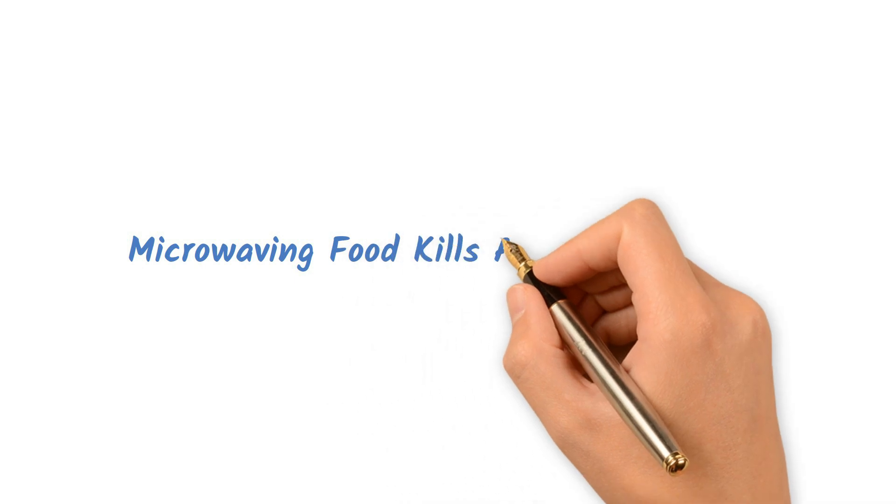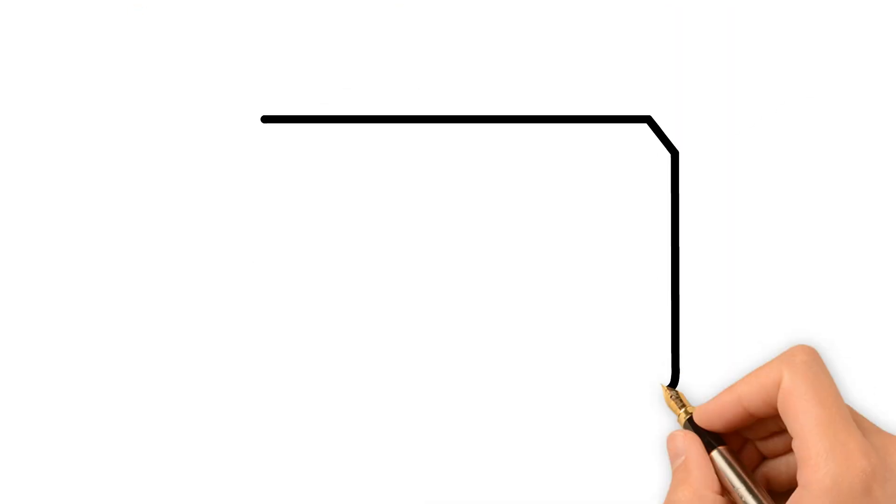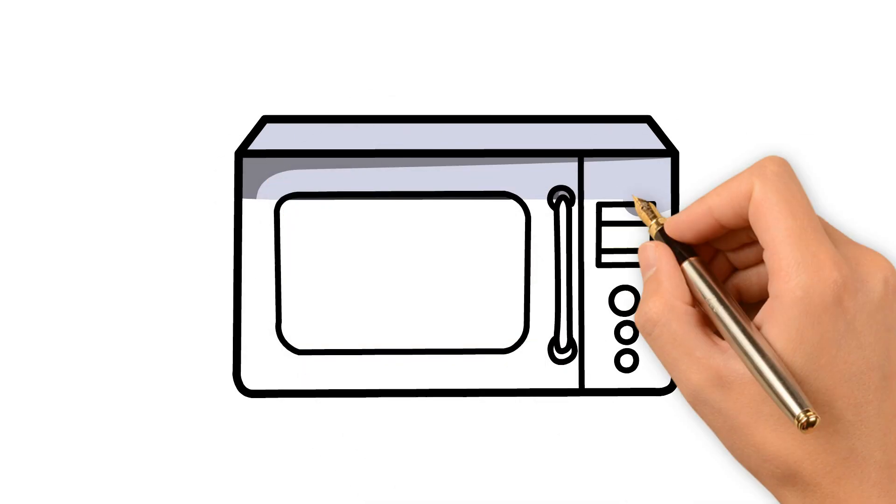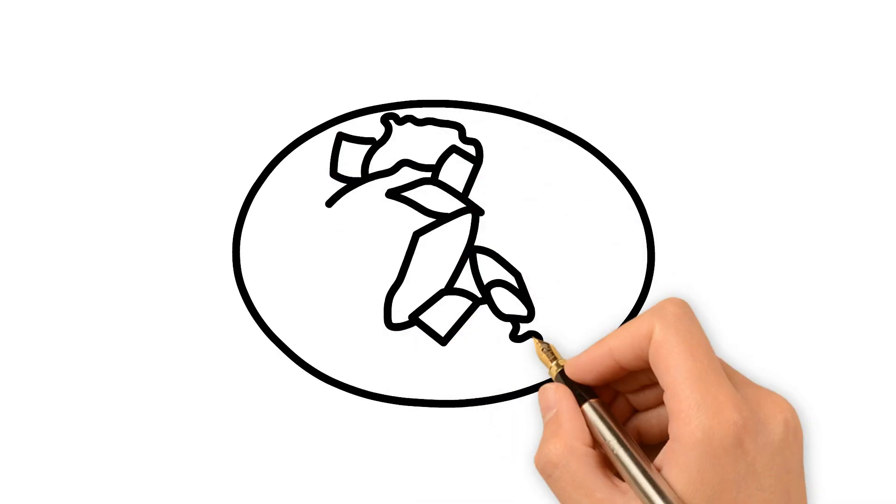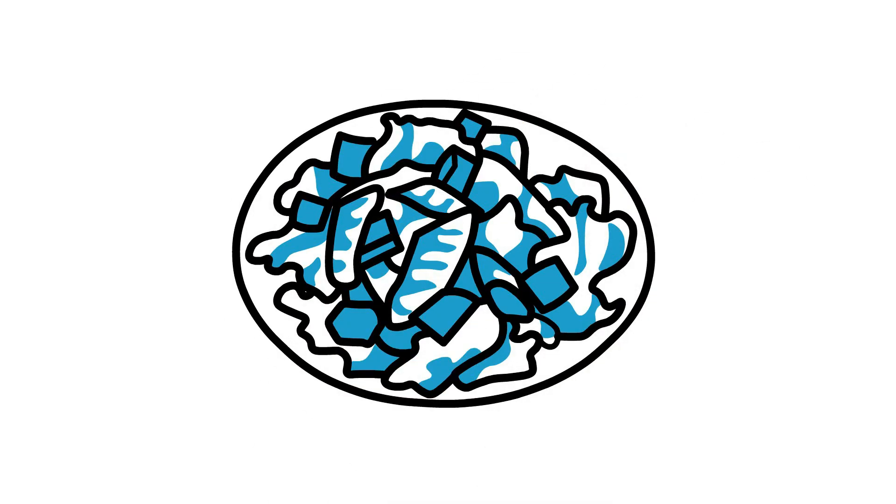Microwaving food kills all the nutrients. While some nutrients may degrade slightly, microwaving is generally a decent way to preserve nutrients compared to other cooking methods like boiling or frying. Microwaving cooks food quickly, minimizing nutrient loss.